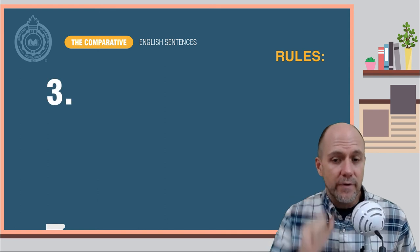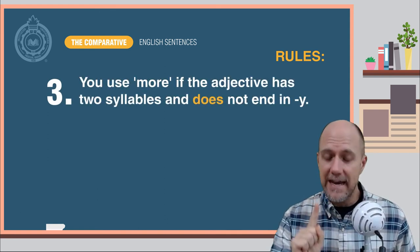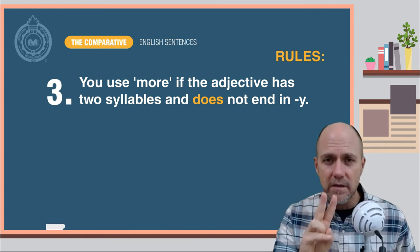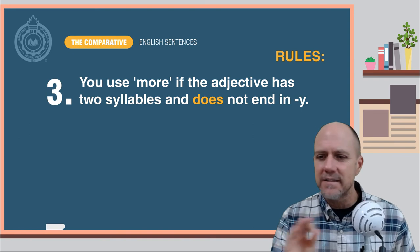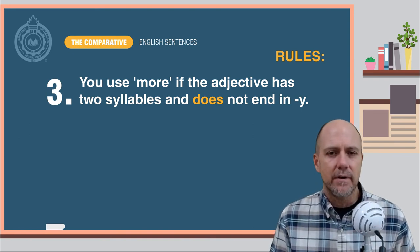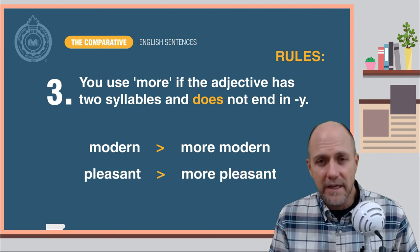Now, rule number three: You use the word more before the adjective if the adjective has two syllables and does not end in y. Here are some examples: modern becomes more modern, pleasant becomes more pleasant.